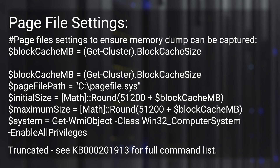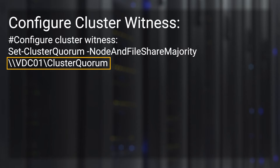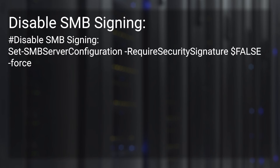We're also going to work with page file settings on our two cluster nodes. Next, we set up our quorum resource — we're using a file share witness. I am putting this file share on a domain controller, which is not a good security practice, but due to lab limitations I'm doing that for this demo. Next we deal with SMB signing — we have a command to disable that, and for performance reasons we want to make sure it is disabled.